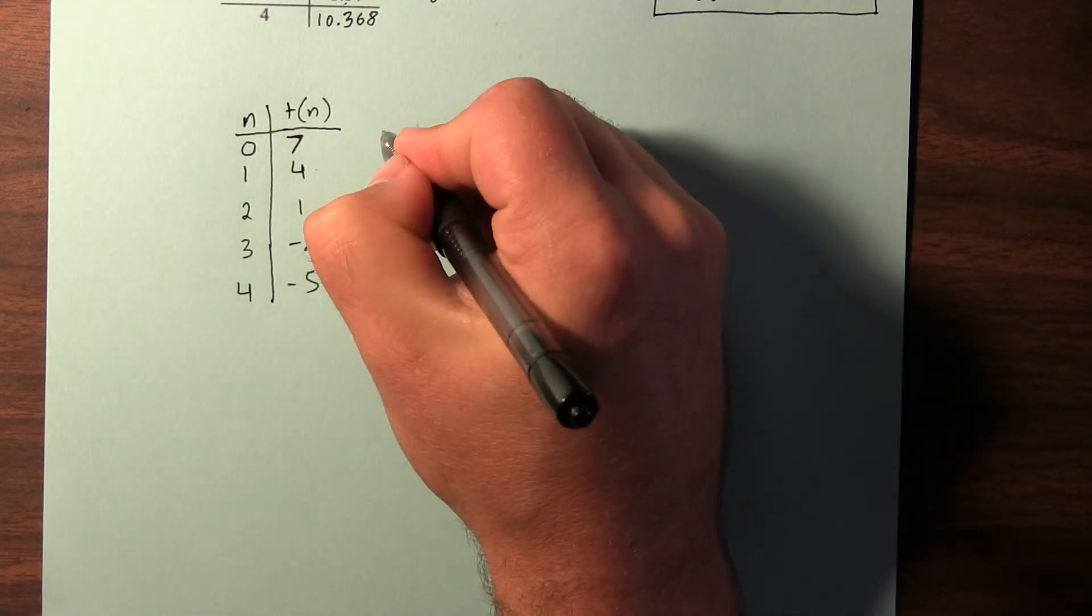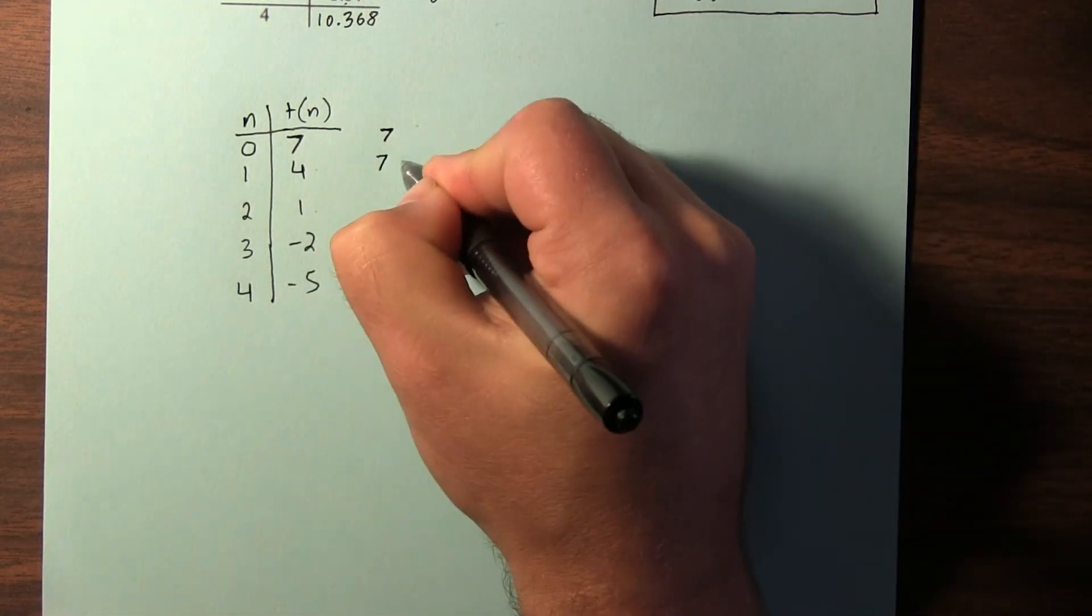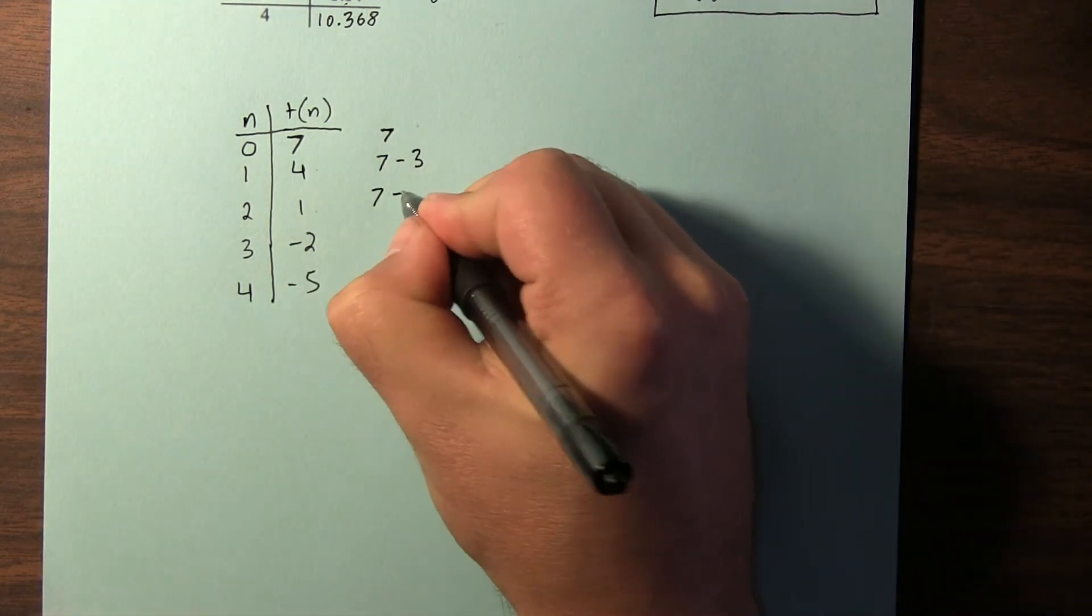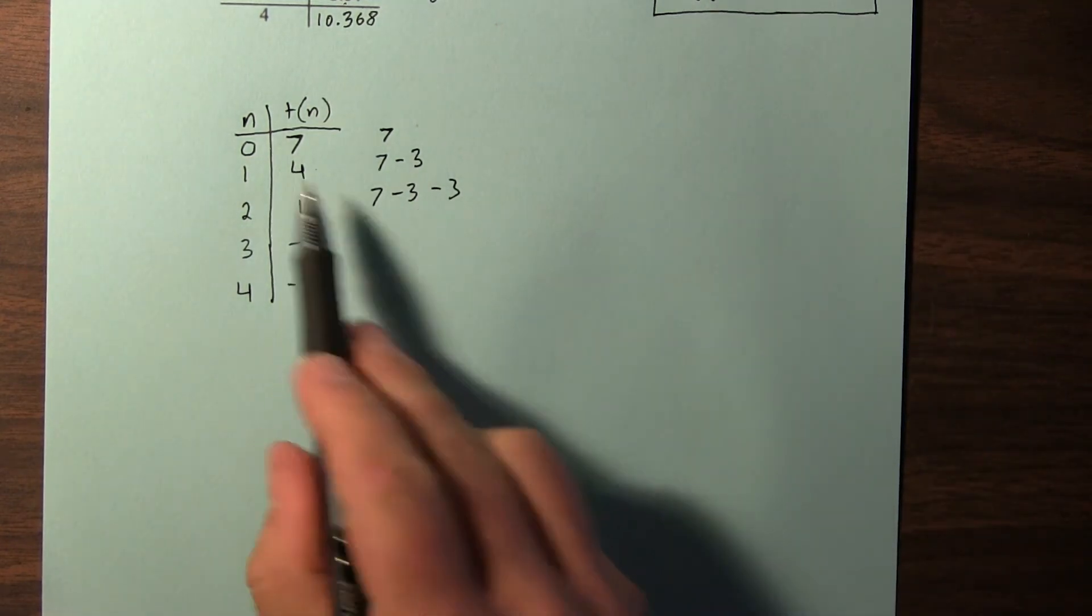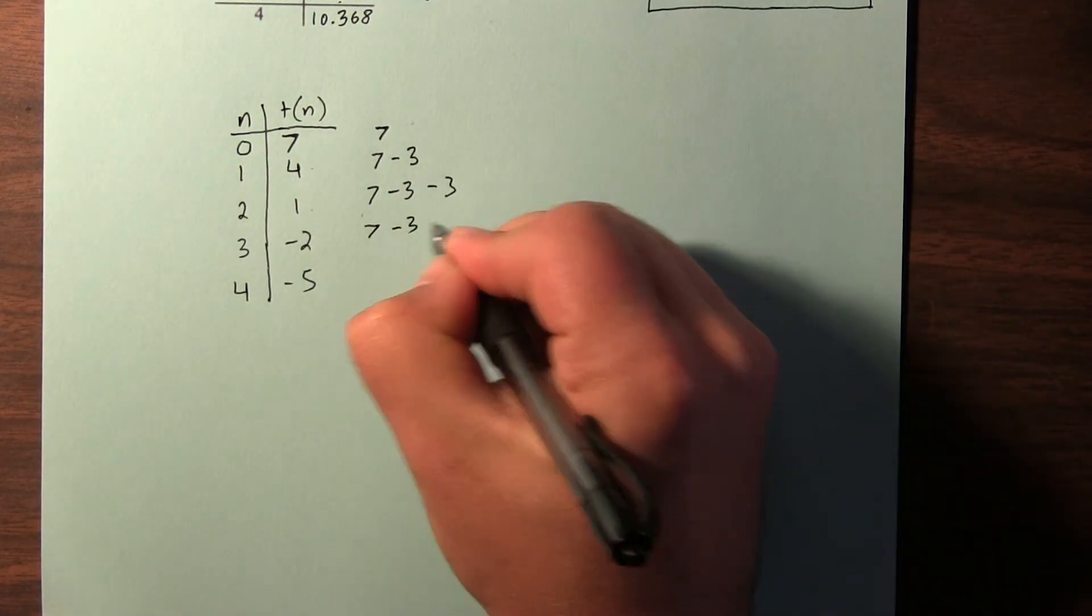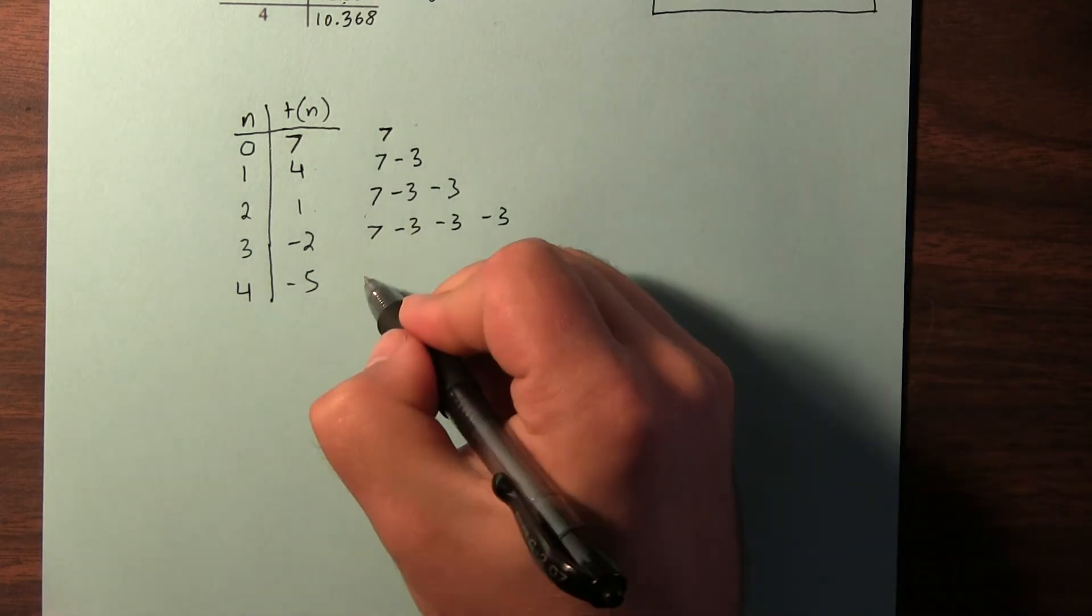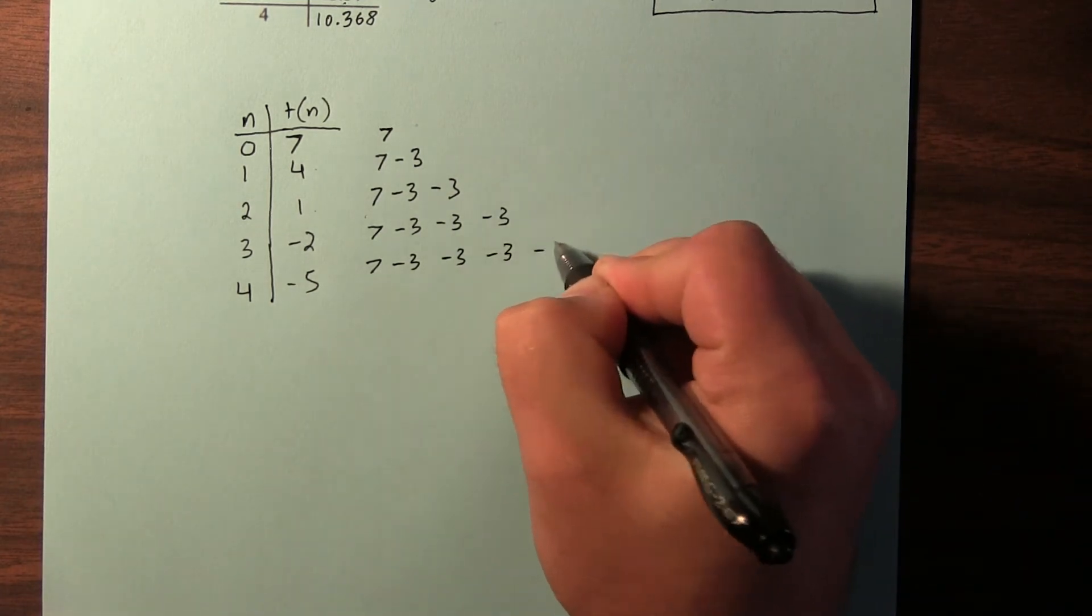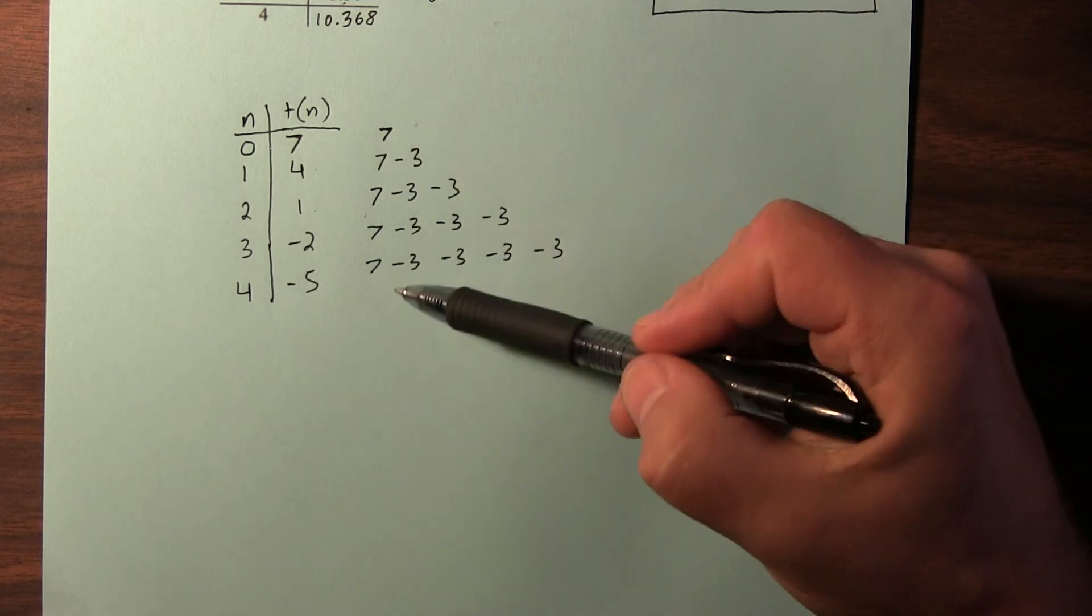So let's look at this a different way. If this term is 7, and the next term is 4, 4 is 7 minus 3. Now the 1 is actually 7 minus 3, but then minus another 3, because the 7 minus 3 would get us to the 4, but we have to subtract another 3 to get to the 1. Down here would be 7, minus 3, minus 3, and minus another 3. By the time we get to negative 5, we have 7, minus 3, minus 3, minus 3, and minus another 3. We're subtracting lots of 3's by that time. But notice everything starts with that 7, that initial term.